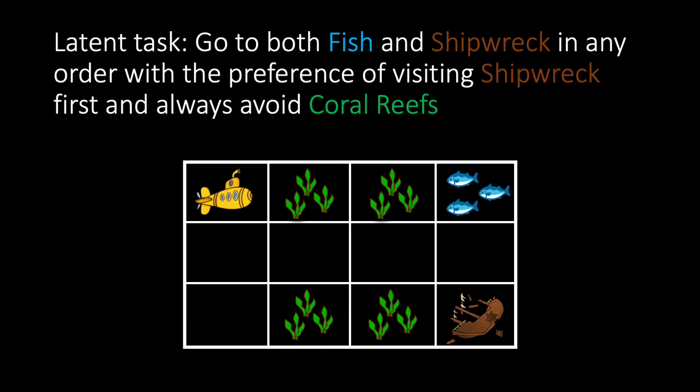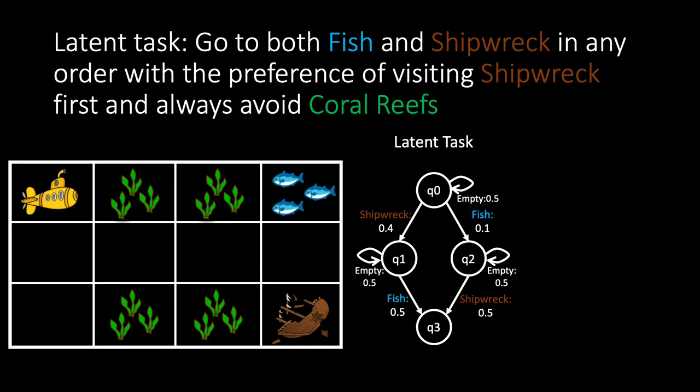First, let us assume we have a latent task of go to both fish and shipwreck in any order with the preference of visiting shipwreck first and always avoid coral reefs. The latent task can be converted to DFA as follows.